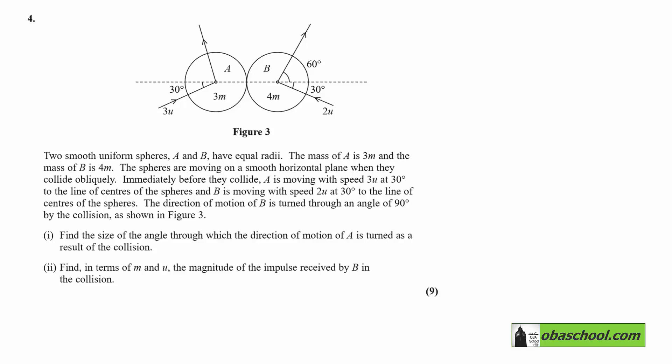Two smooth uniform spheres, A and B, have equal radii. The mass of A is 3m and the mass of B is 4m, and we can see that in the diagram.